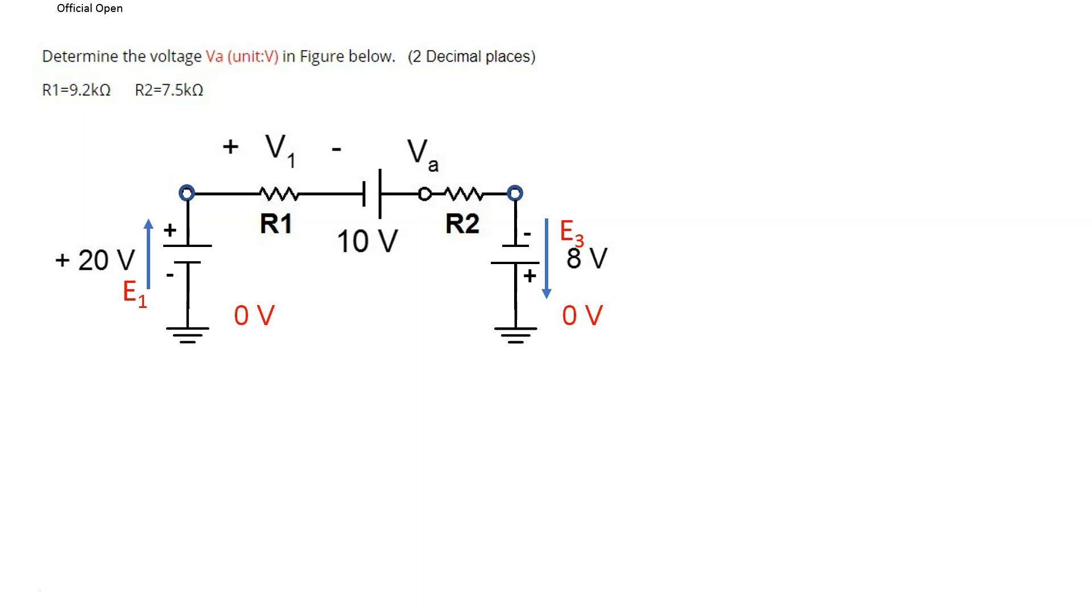We can then indicate the IS, the current from the source, and then indicate the other voltages and their directions. It's important to get the direction correct. And finally, we indicate the direction of VA, the voltage we want to calculate.